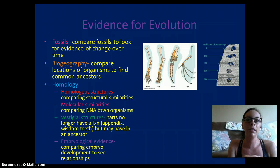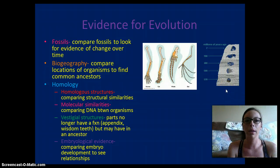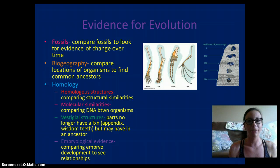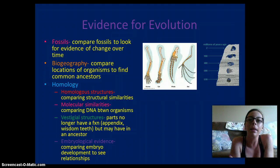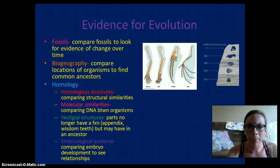Some of the evidence for evolution includes fossils. If you look at fossils down in the layers of the earth, you can see change over time — the deeper the fossil, the older the organism was. Biogeography allows you to compare the locations of organisms to find common ancestors, using organisms alive today as well as fossils. Homology is a similarity within organisms — homologous structures have very similar form but may function differently.